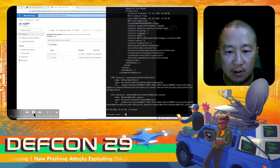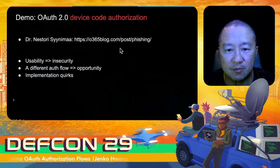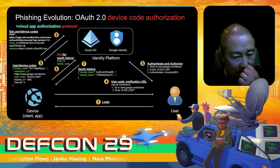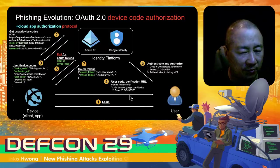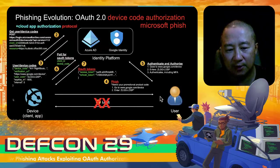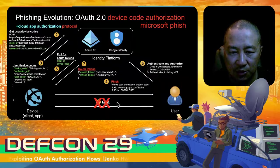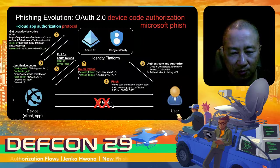That's the end of the phish. The super interesting part from this view is the pivot, as well as the fact that we did not need to supply any secrets along the way — it was really easy. Let's switch back and look at device code authorization in a bit more detail, going back to the protocol itself and figuring out how we abused it.